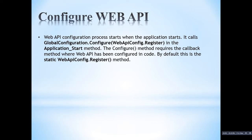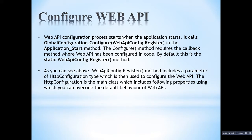The Configure method requires a callback method. By default this is a static method — the WebApiConfig Register method includes a parameter of HttpConfiguration type. HttpConfiguration is the main object where we are adding all the behaviors like message handlers, formatters, and resolvers. It overrides the behavior of Web API, and this class is present in the System.Web.Http namespace.